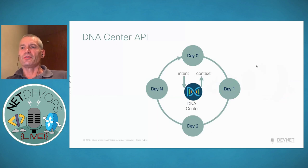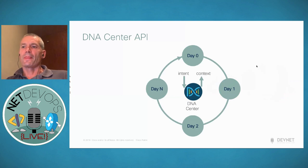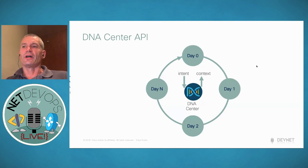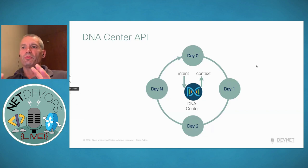If I think about what DNA Center is in terms of a controller, it's really an abstraction around how we integrate in and automate the network. Rather than programming the network device by device, DNA Center gives us a system view of the network as a whole and allows us to interact with the network as a series of devices rather than individual devices in isolation. Being an abstraction, there are two key things DNA Center allows us to do. One is automation through an abstraction called intent — we have a way of making configuration changes in a very abstracted way.